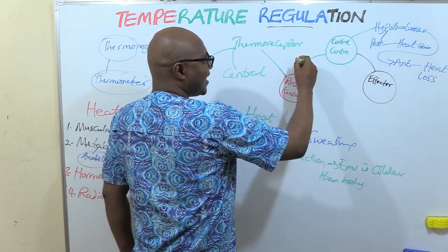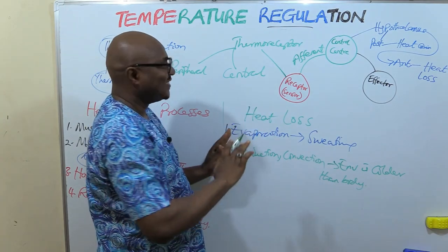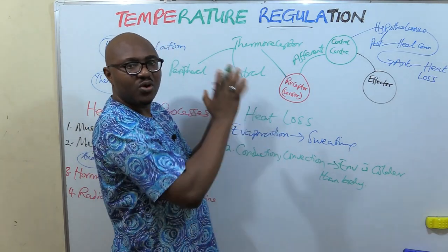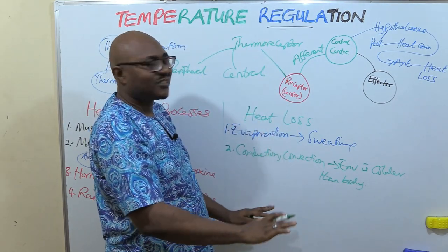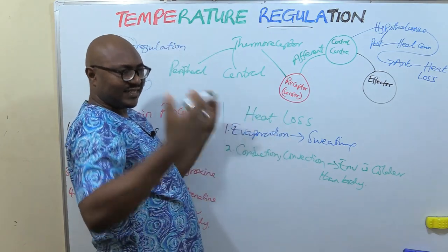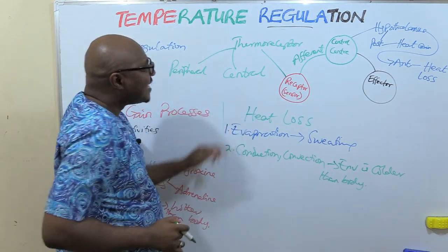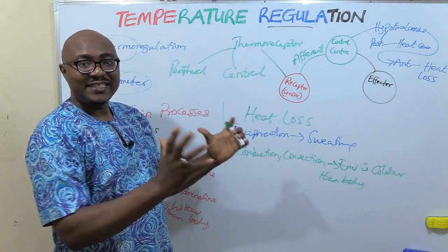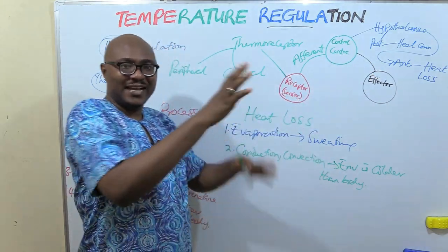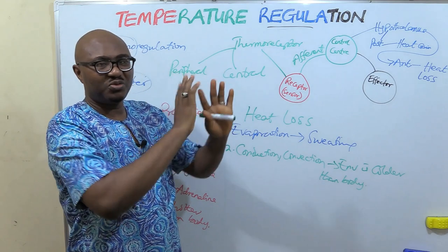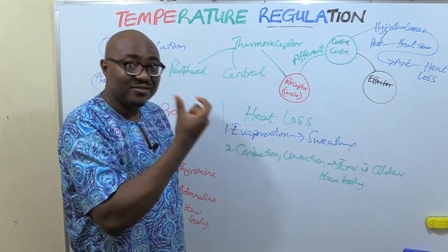Through afferent nerves, the peripheral thermoreceptors send the message — whether it's cold or hot — to the control center. The control center then responds: if there is heat loss (environment is cooler), it activates the heat gain center; if the environment is hotter, it activates the heat loss center. The central thermoreceptors, located in the hypothalamus, sense mainly the temperature of the blood, which represents core temperature.